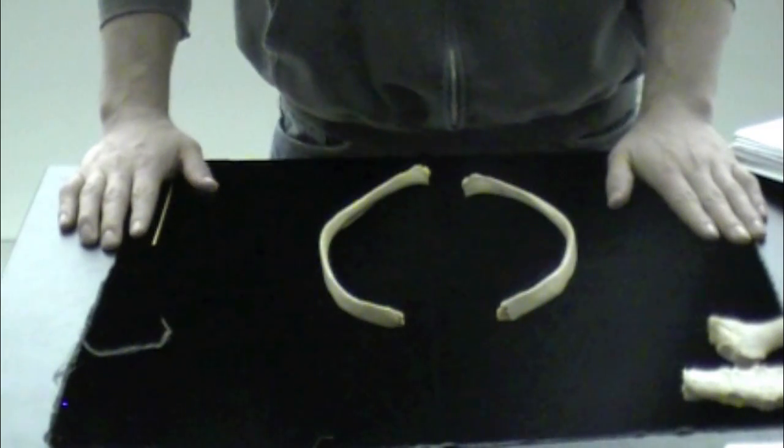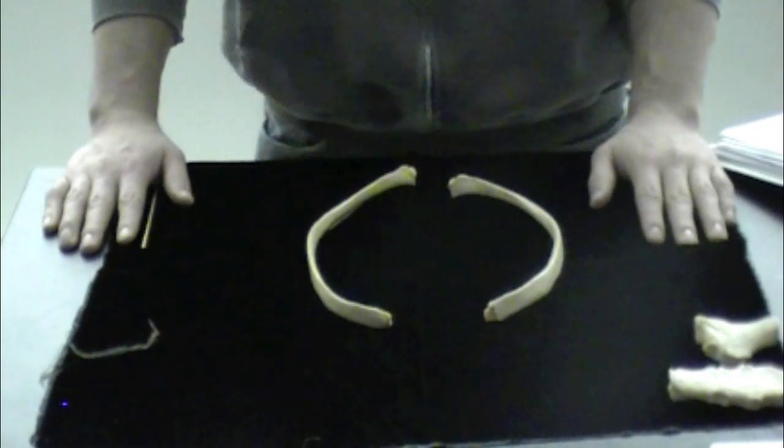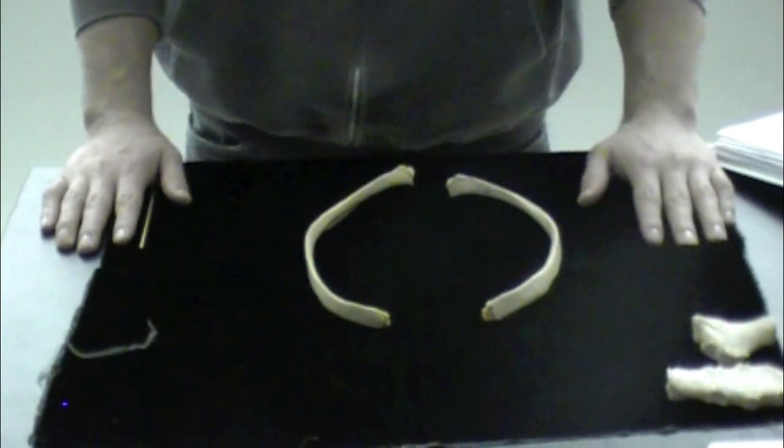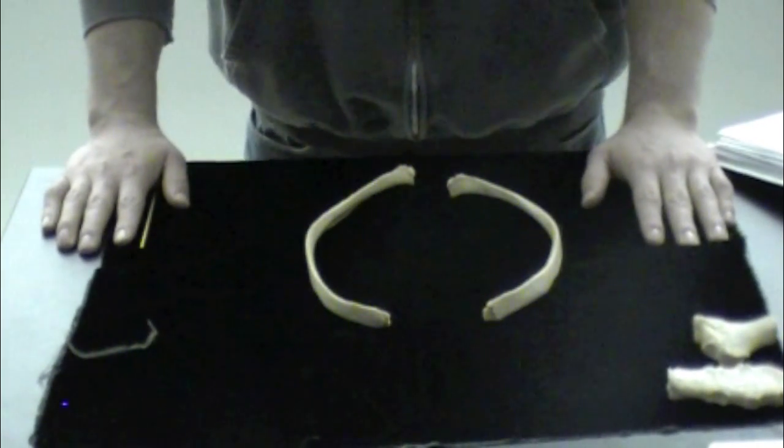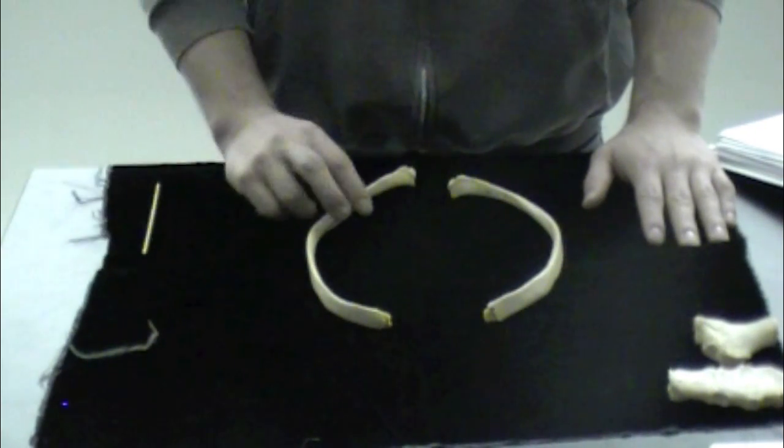Now we'll take a look at some ribs. In your body you have seven true ribs, you have five false ribs, and two of the false ribs are called floating ribs. A more in depth look here.